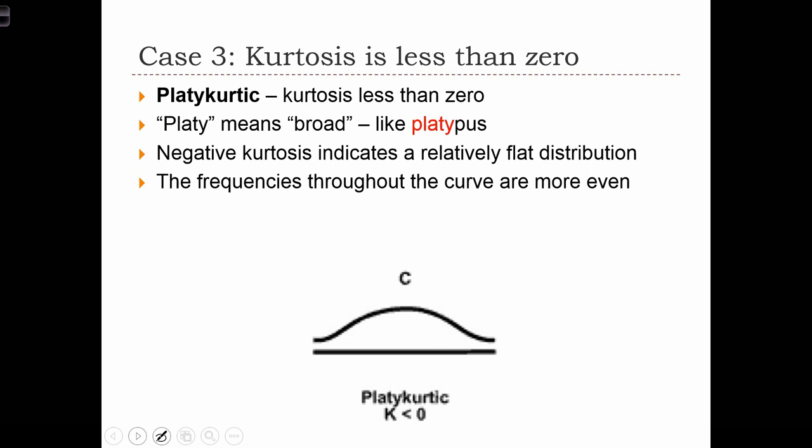Negative kurtosis indicates a relatively flat distribution. In other words, all the frequencies throughout the curve are fairly even. All values are fairly evenly represented, and there's not a lot of peakness in the curve.